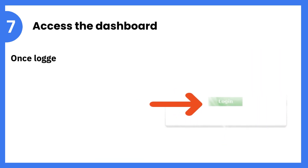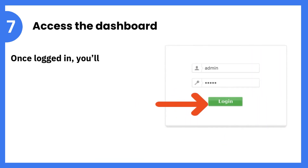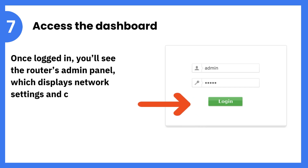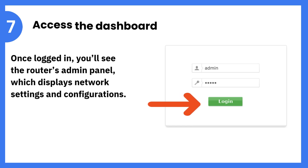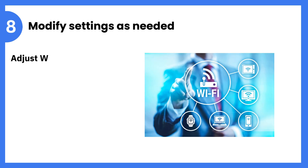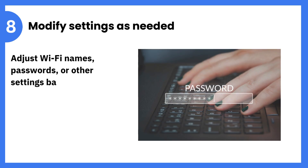Step 7: Access the dashboard. Once logged in, you'll see the router's admin panel, which displays network settings and configurations. Step 8: Modify settings as needed. Adjust Wi-Fi names, passwords, or other settings based on your requirements.